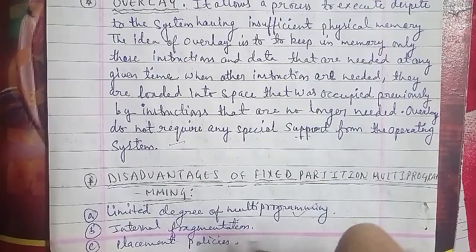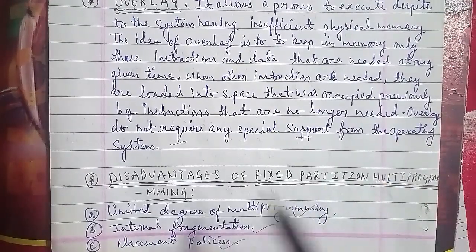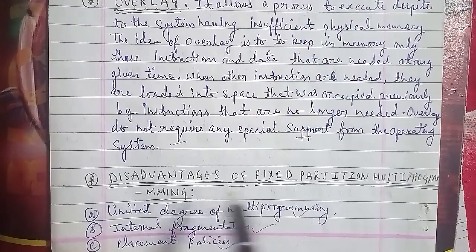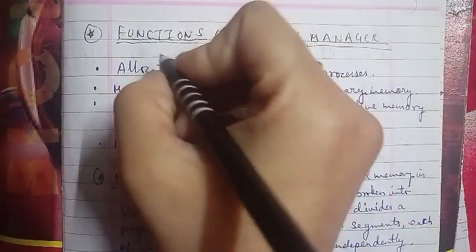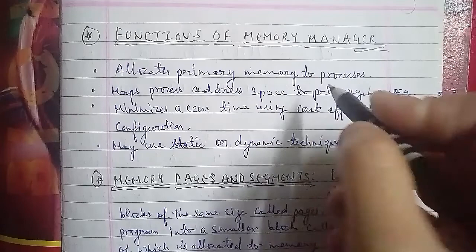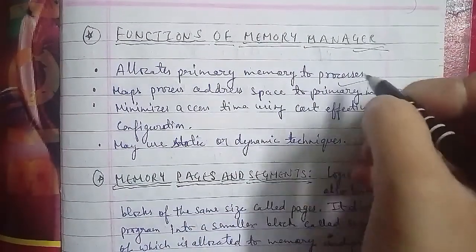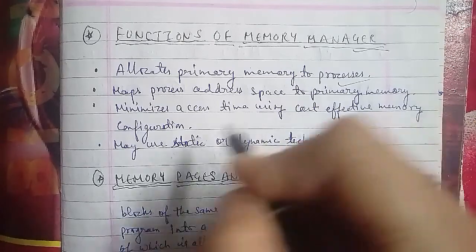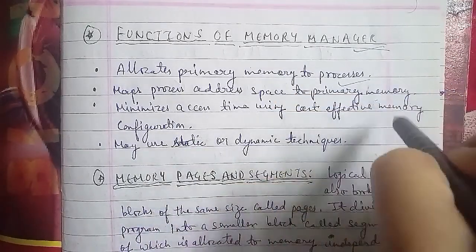Next is the functions of the memory manager. There are four functions: first, allocate primary memory to a process; second, map process address space to the primary memory; third, minimize access time using a cost-effective memory configuration; and fourth, may use static and dynamic techniques. If asked about the functions of the memory manager, write down all four.